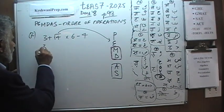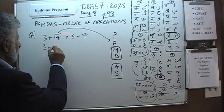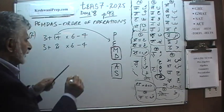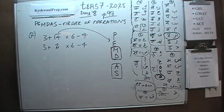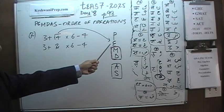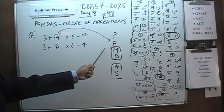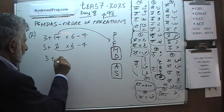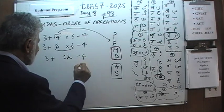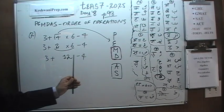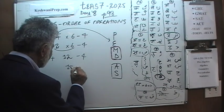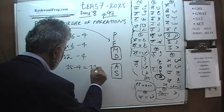Let's take care of it. The square root of 4 is simply 2. So we now have 3 plus 2 times 6 minus 4. Multiplication comes next in the order. We do 2 times 6 first, which gives us 12. So we end up with 3 plus 12 minus 4. Now we simply move left to right: 3 plus 12 is 15, and 15 minus 4 is 11. That is our answer.